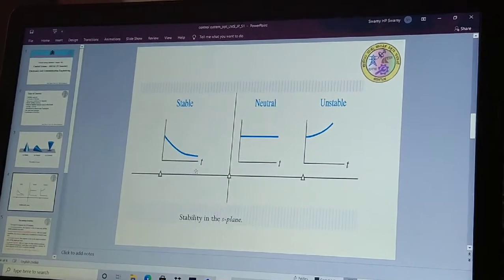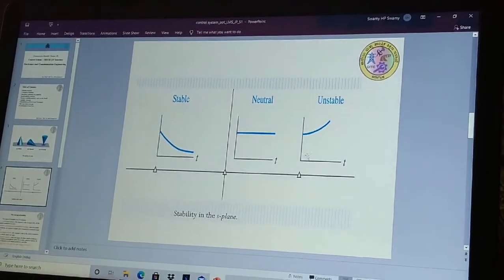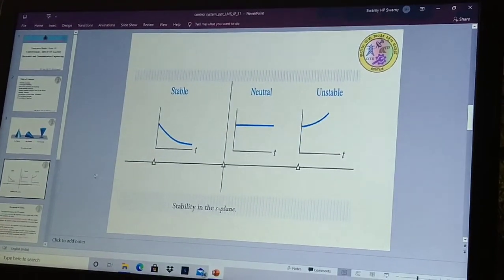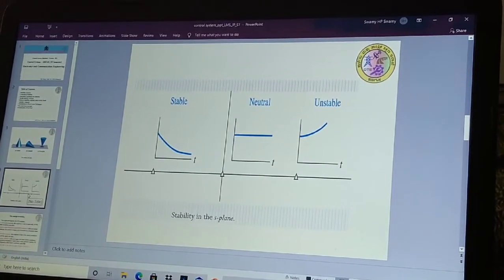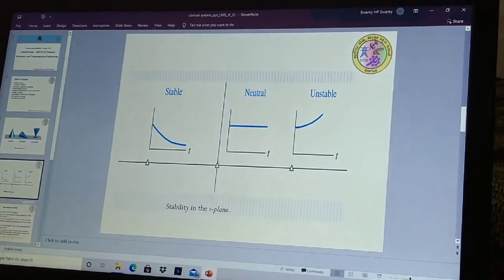And then, these are the examples. How your stable system, neutral, unstable in S plane. Before that cone, how it will be positioned stable, unstable and neutral. So now, I will move on to the concepts of stability.